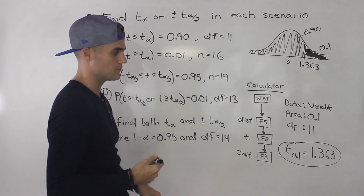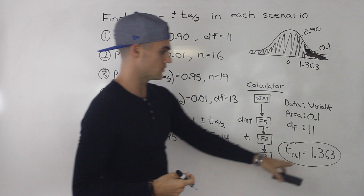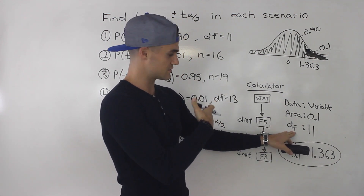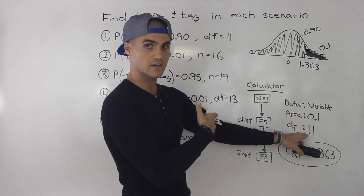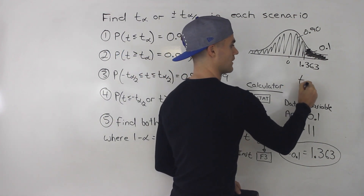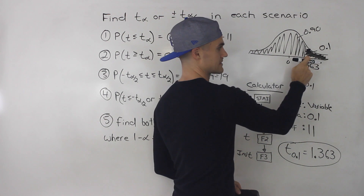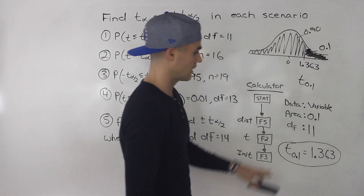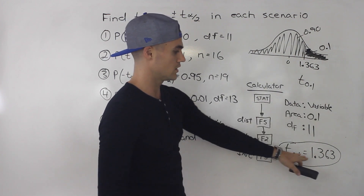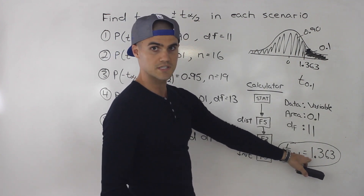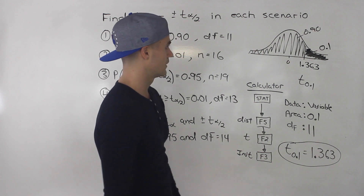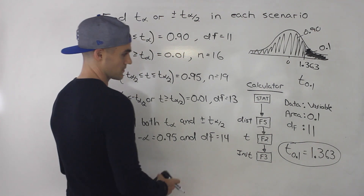If you look that up in the table, you'd look up degrees of freedom of 11 on the left side, then find the column for t of 0.1, and you would also get 1.363. So that's how you do the first one.